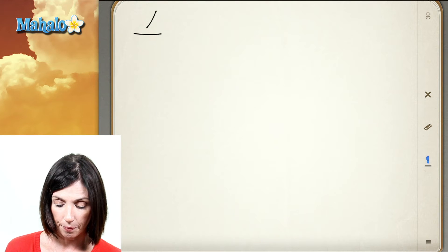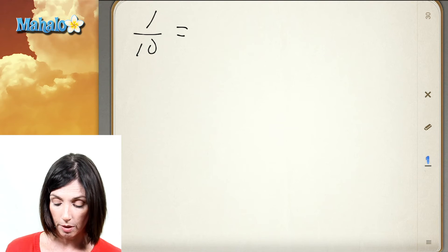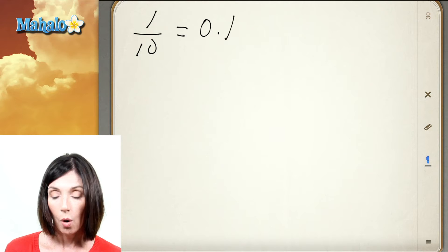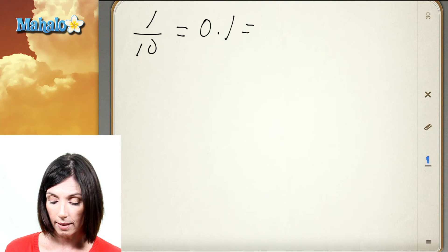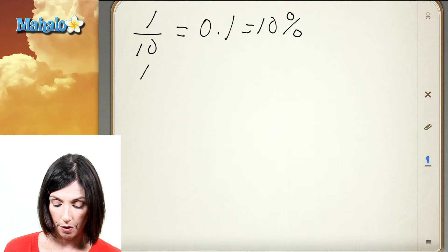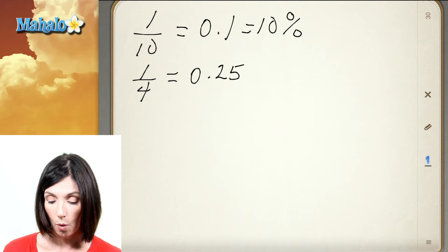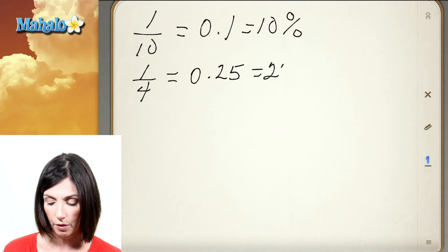Let's take a look at the fraction one-tenth. That can be written as the decimal 0.1 or as 10%. Another really common one is one-fourth. One-fourth written as a decimal is 0.25 or as a percentage as 25%.